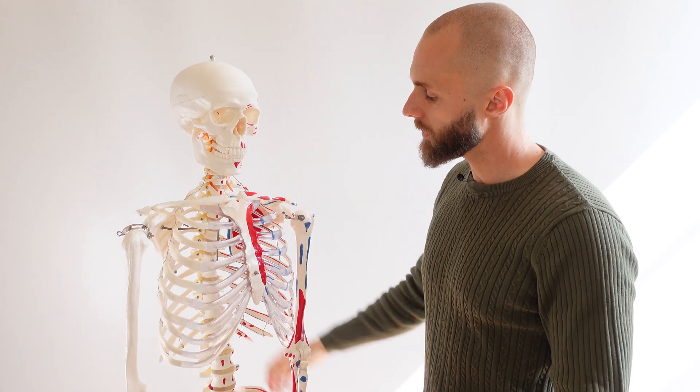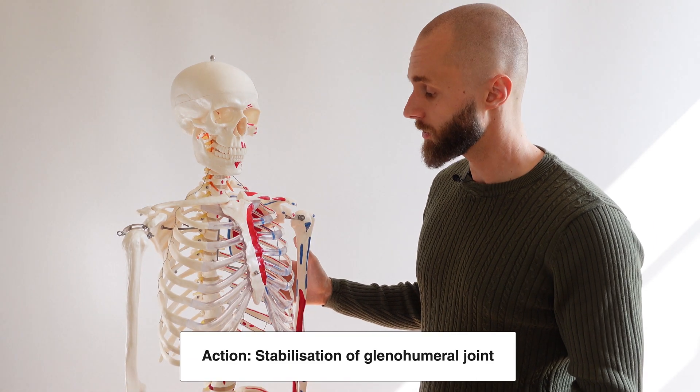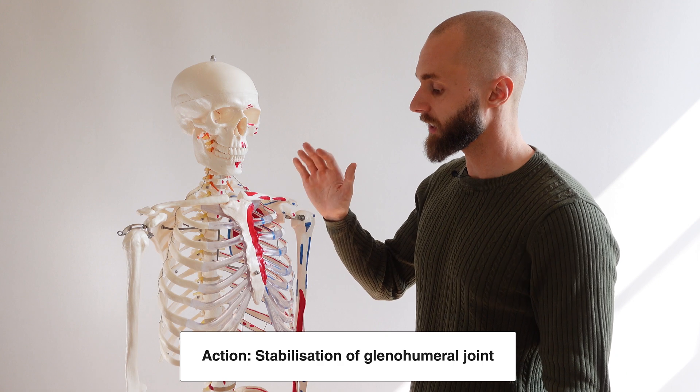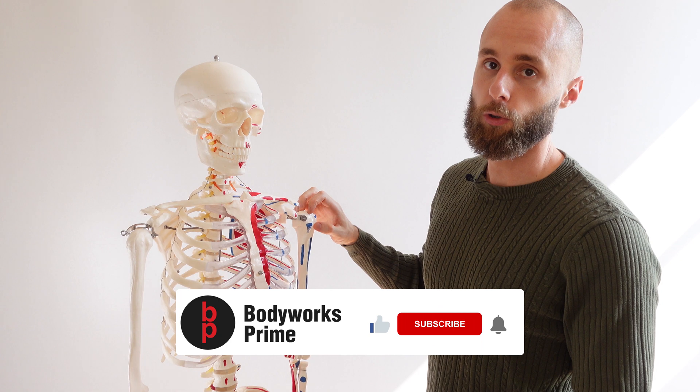It's important to remember that the subscapularis muscle forms part of the rotator cuff muscles. It's not just working in isolation, it's working together with all those other muscles to stabilize the humerus in the glenohumeral joint.